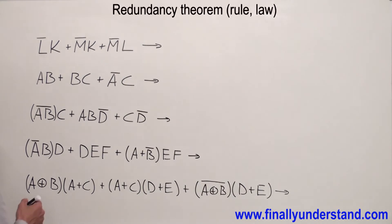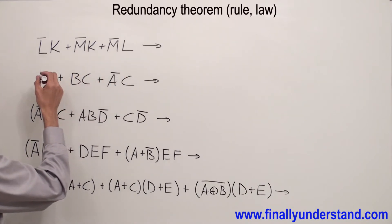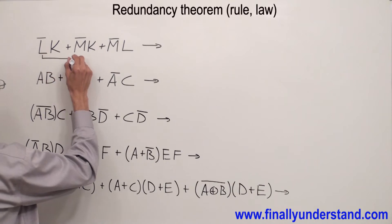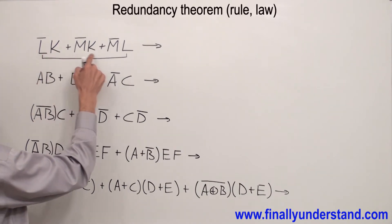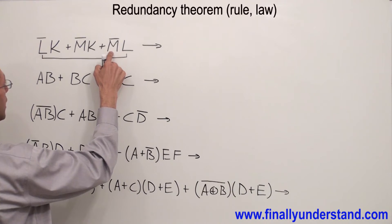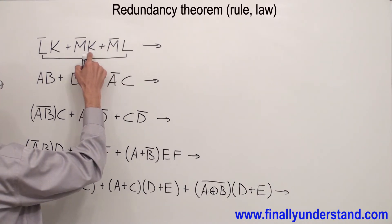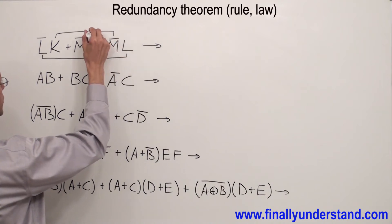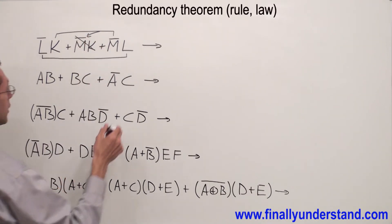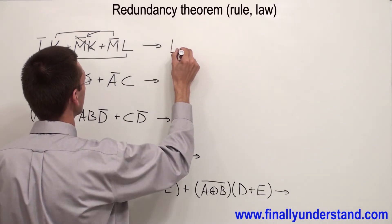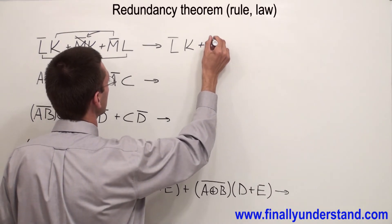What does it really mean? Let's take a look at the very first expression. I have to find the complements first. I have L0 and L — those are complements. What do we have next to L0? We have K, and next to L I have M0. These two variables create an extra term, that's why this term has to be cancelled out. The answer to my expression is L0K or M0L.